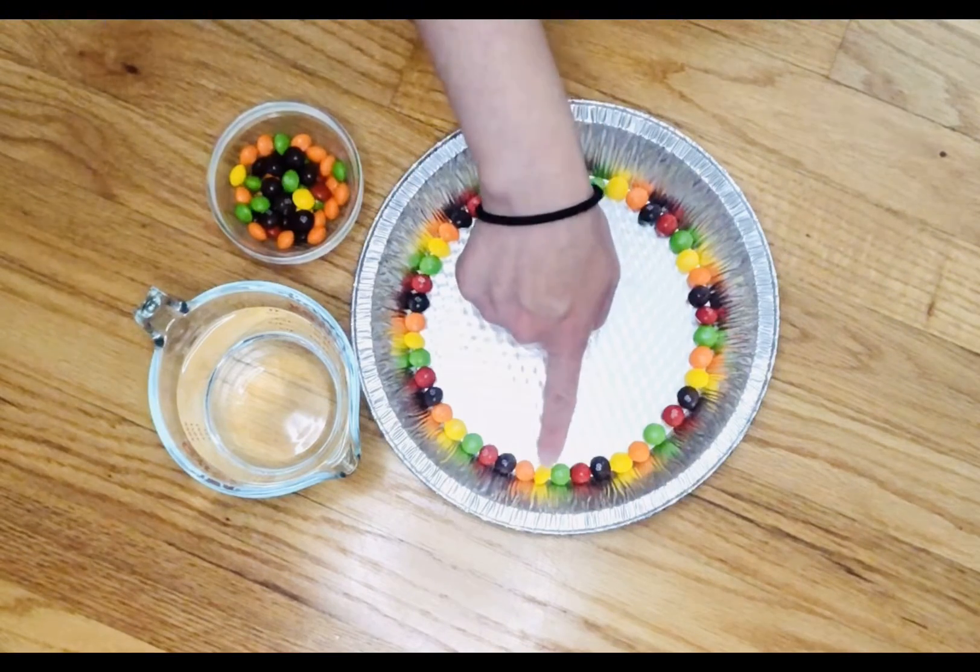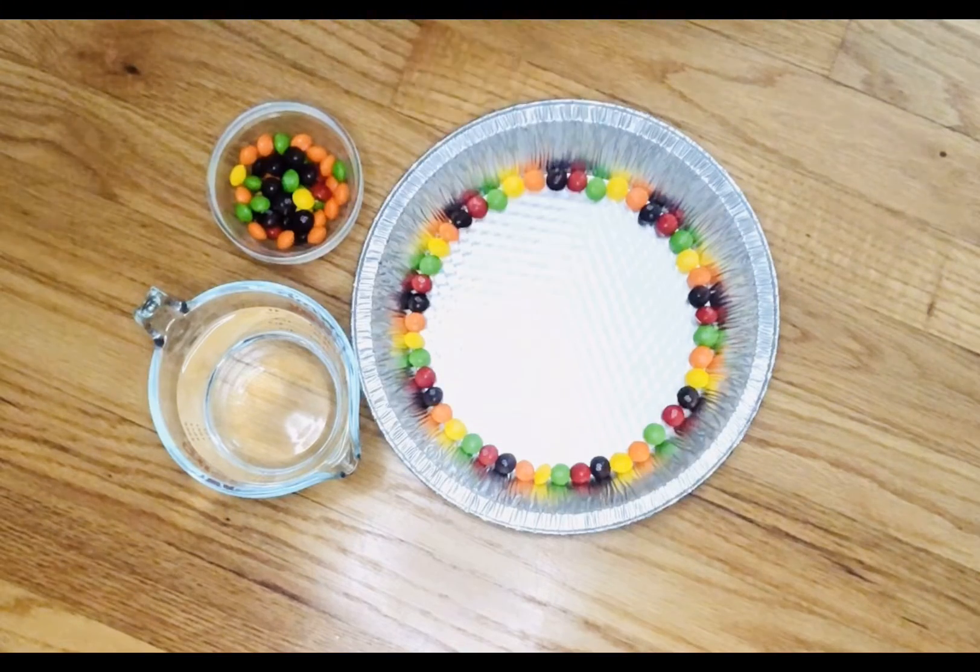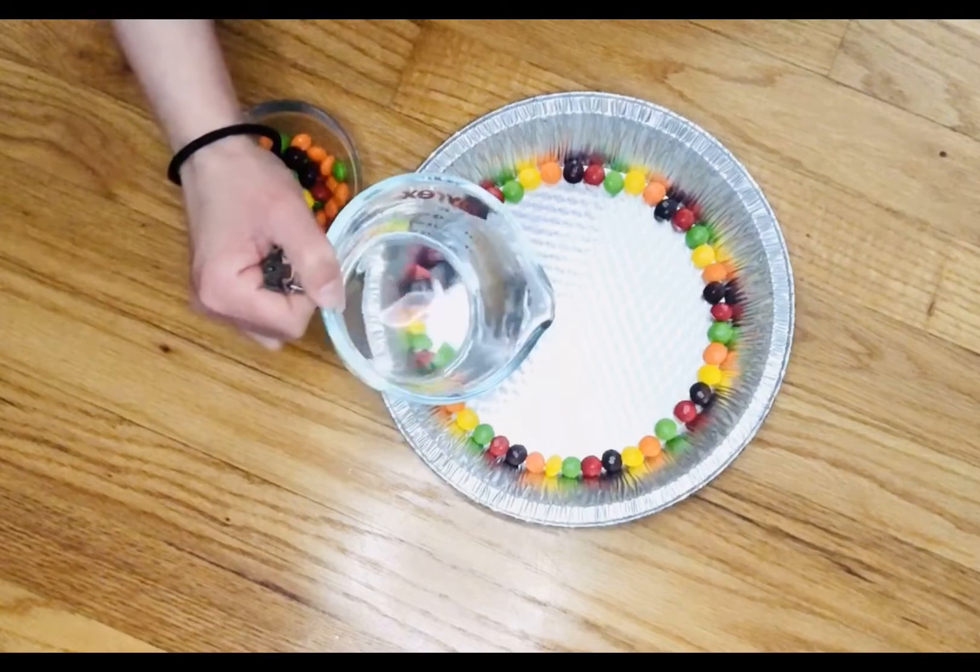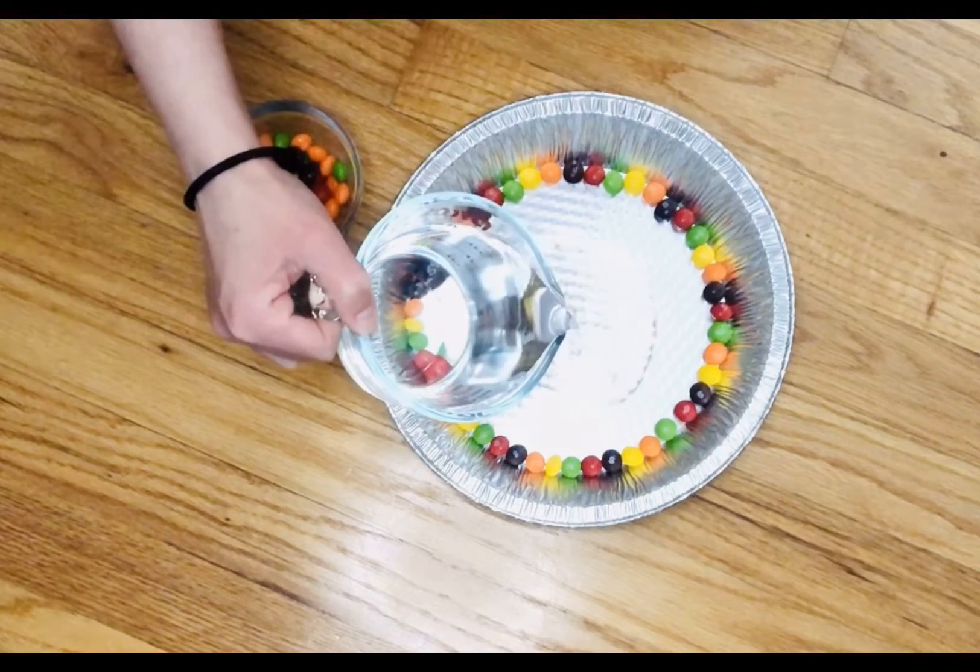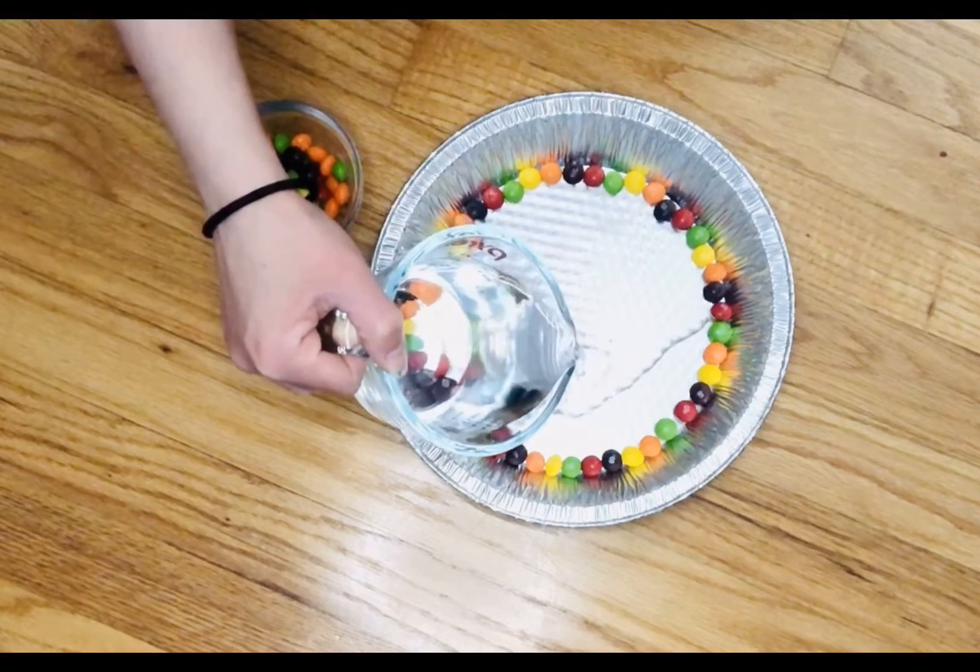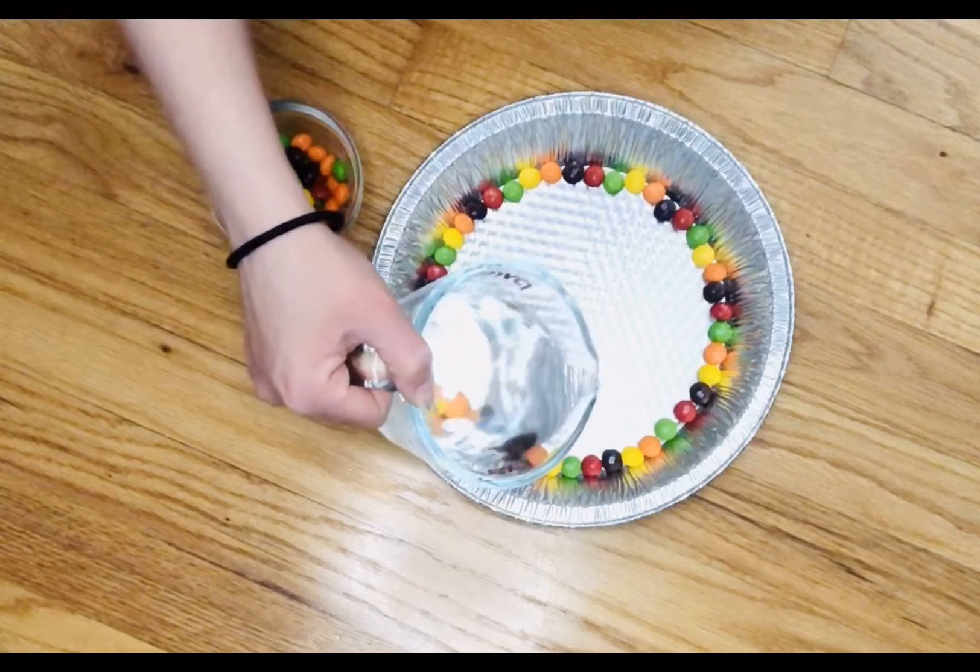I did red, green, yellow, orange, purple, and then repeated the pattern around the plate. Once you have the candy around your plate, you are going to slowly add the water to the middle, just enough so that the water is touching all of your candy.